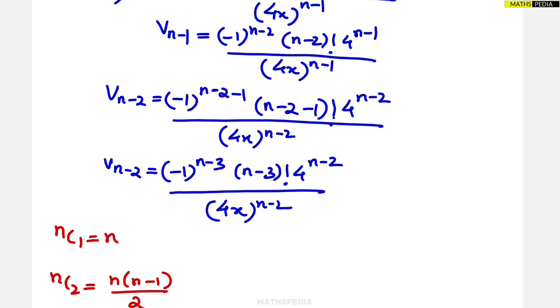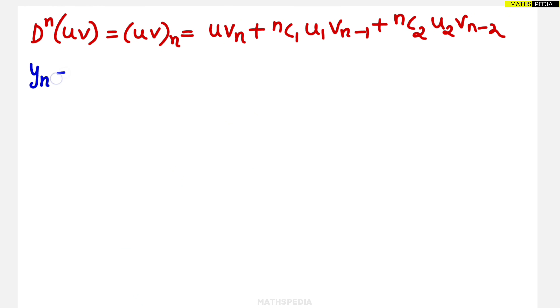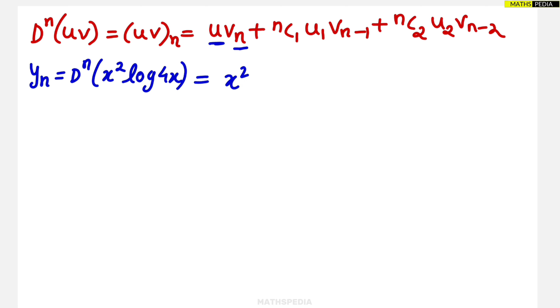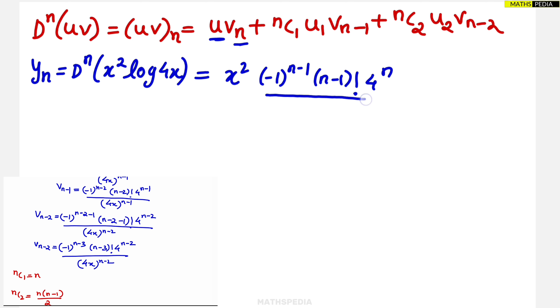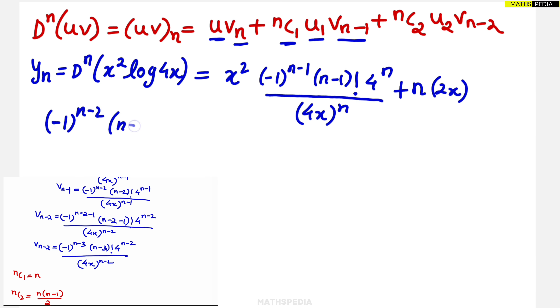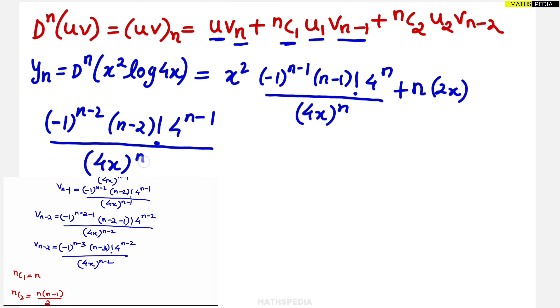Now substitute everything into the Leibniz formula. yn = nth derivative of [x² × log(4x)] = x² × [(-1)^(n-1)(n-1)! × 4^n / (4x)^n] + nC1 × u1 × vn-1, which is n × 2x × [(-1)^(n-2)(n-2)! × 4^(n-1) / (4x)^(n-1)] + nC2 × u2 × vn-2, which is [n(n-1)/2] × 2 × [(-1)^(n-3)(n-3)! × 4^(n-2) / (4x)^(n-2)].